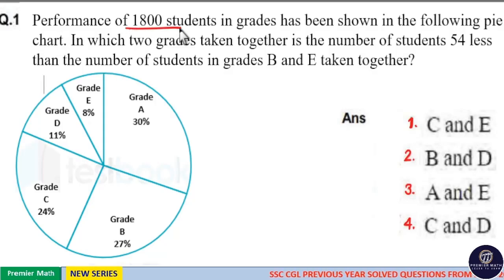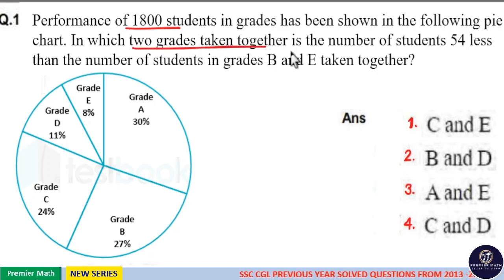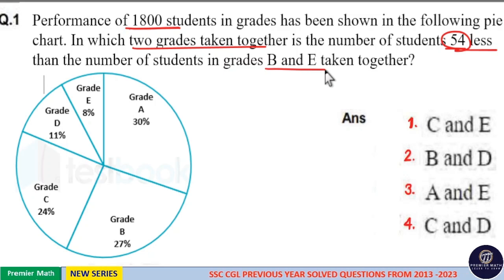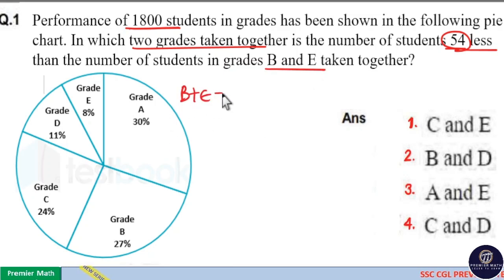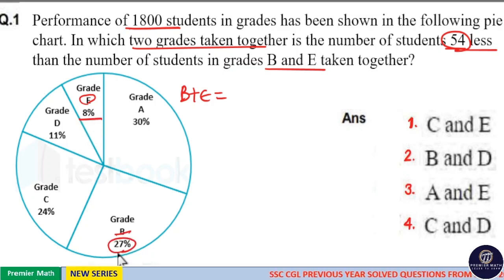The performance of 1800 students in grade has been shown in the following point chart, in which two grades taken together — if the number of students is 54 less than the number of students in grade B and E taken together. So, the number of students in grade B and E taken together: in E there are 8 percentage, and in B there are 27 percentage students.